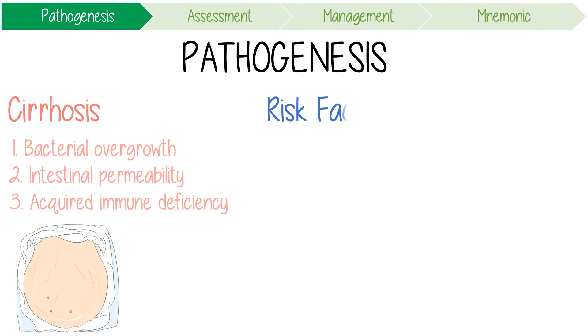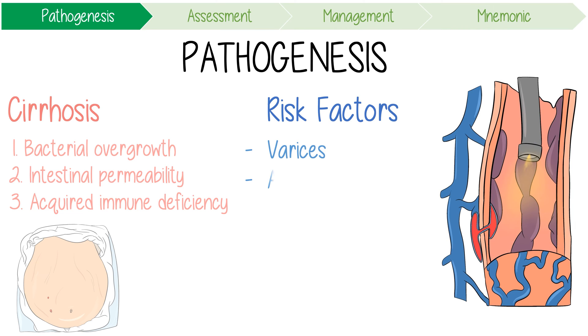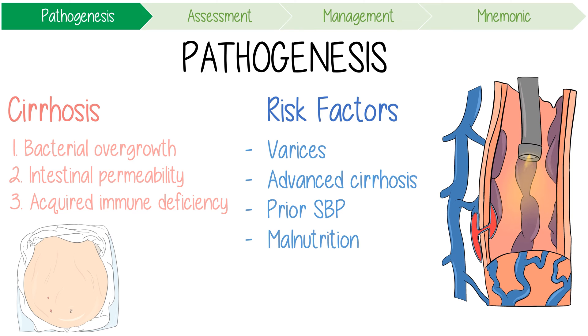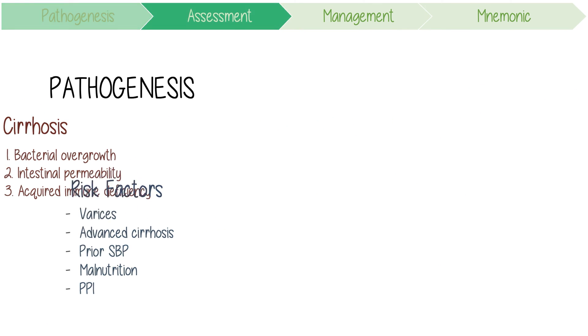Key risk factors for SBP include varices, advanced cirrhosis, a prior episode of SBP, malnutrition, and the use of proton pump inhibitors.